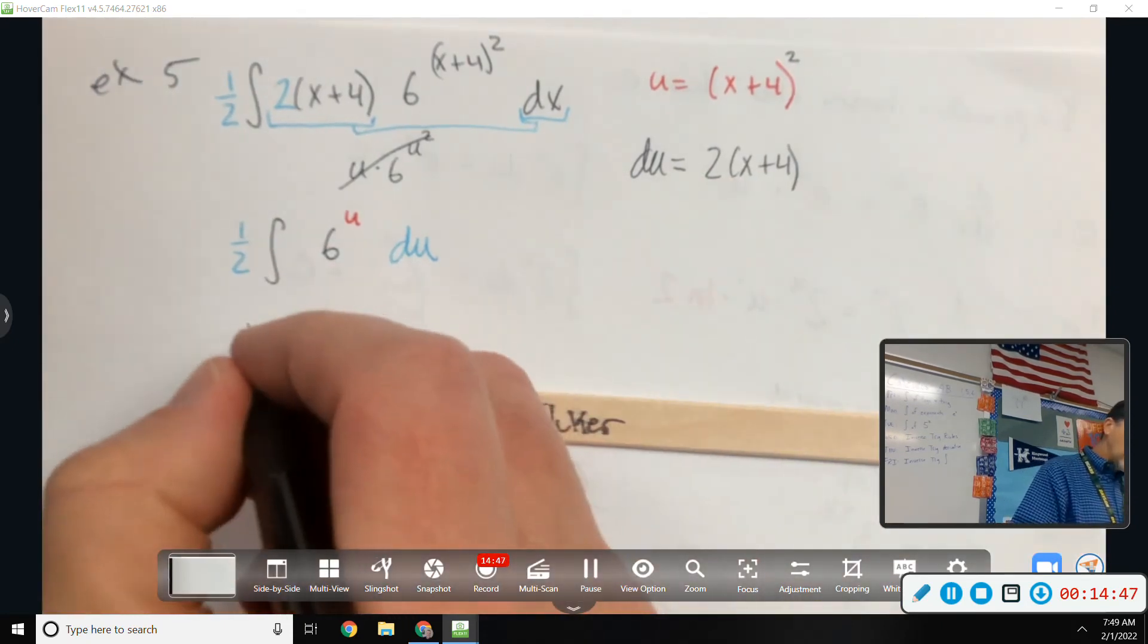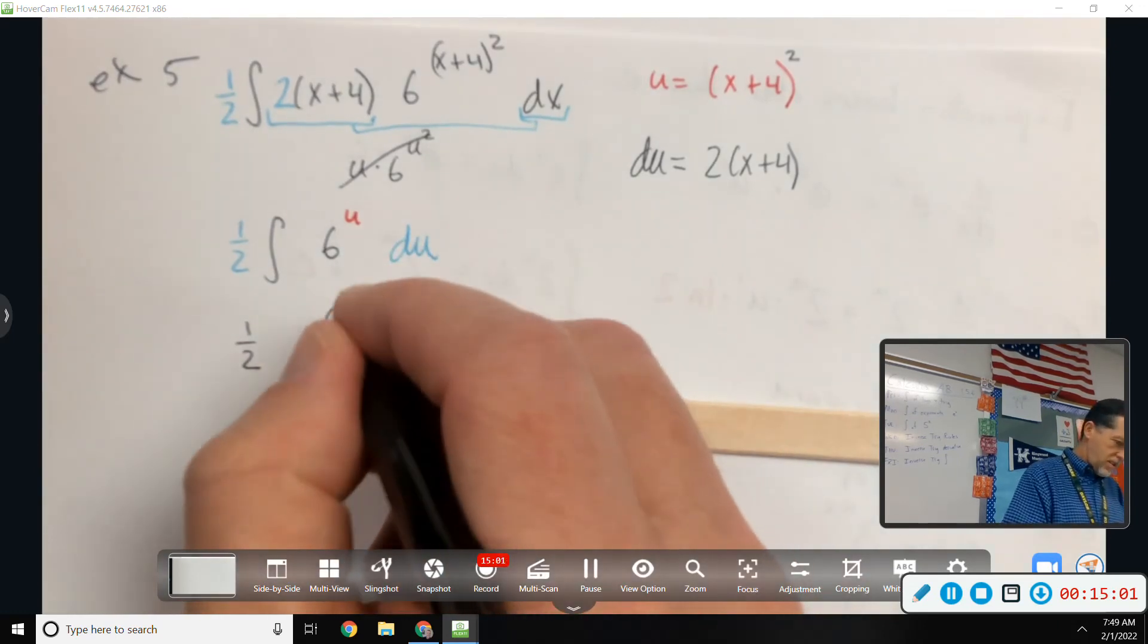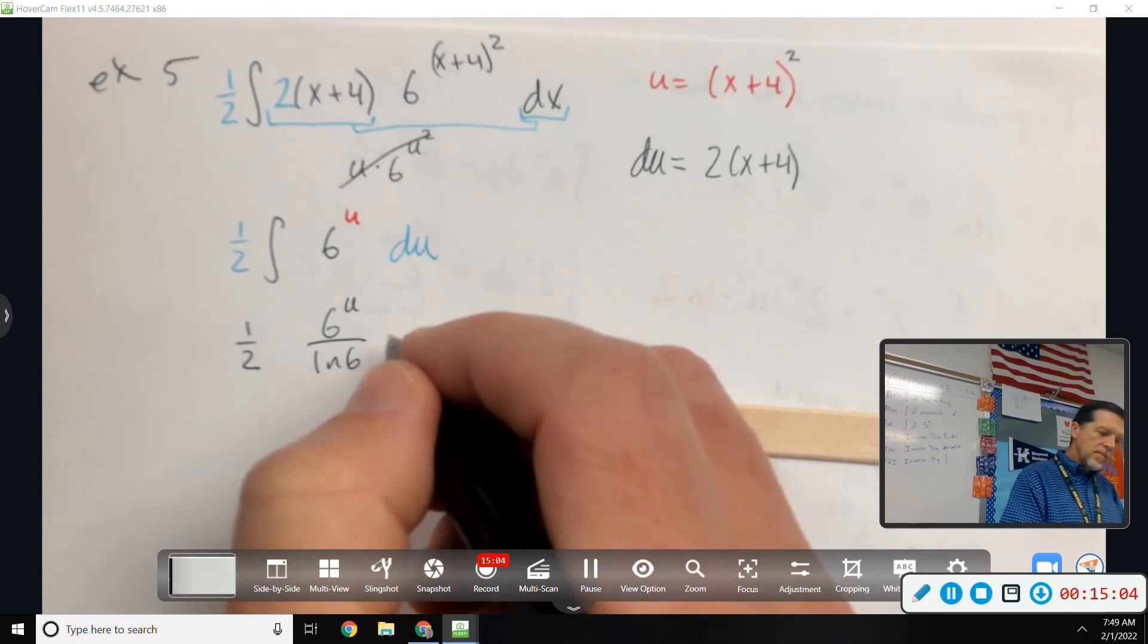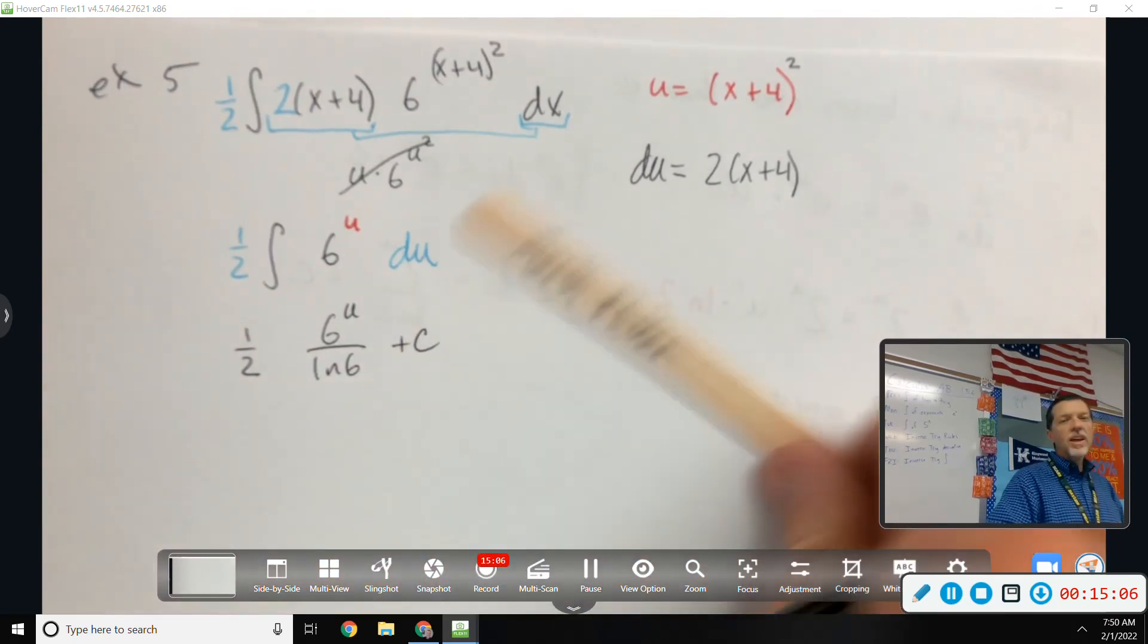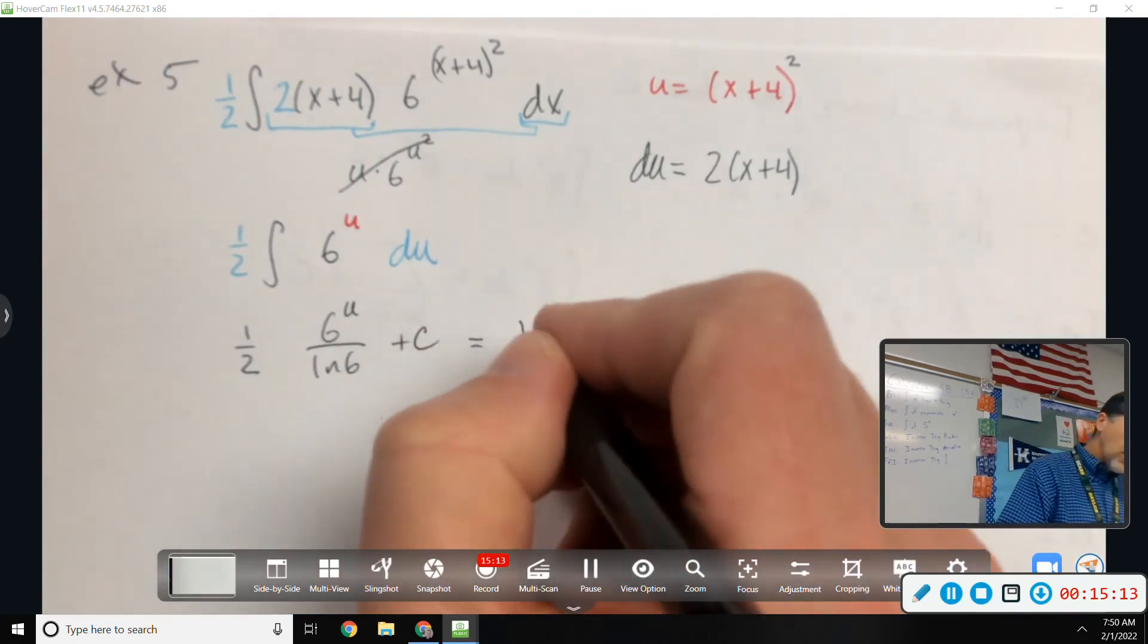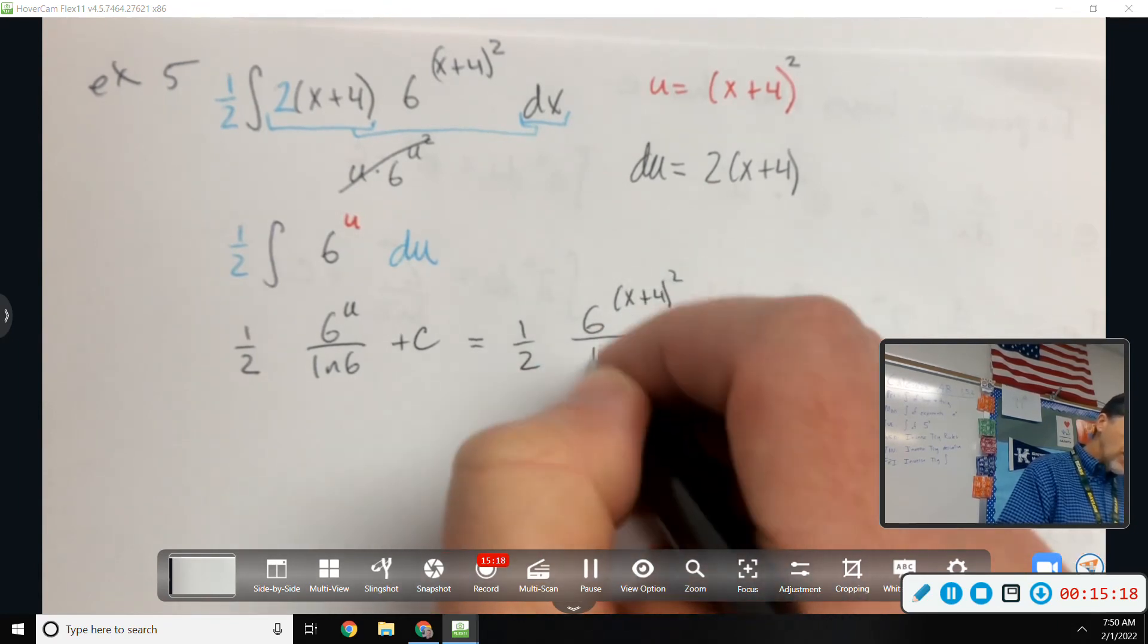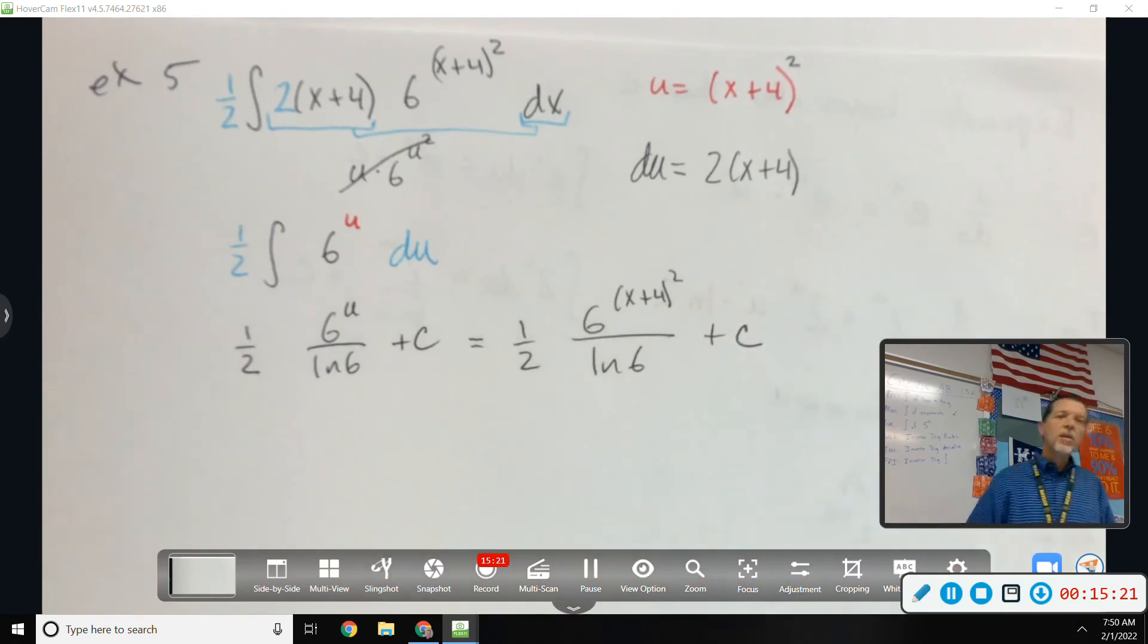Mark, what's the anti-derivative of 6 to the U DU? Is it 6 to the U over natural log of 6? That is exactly right. Plus C. I'm not quite done with the problem because I need to put the U stuff back in there. So 1 half times 6 to the X plus 4 squared over natural log of 6 plus C.